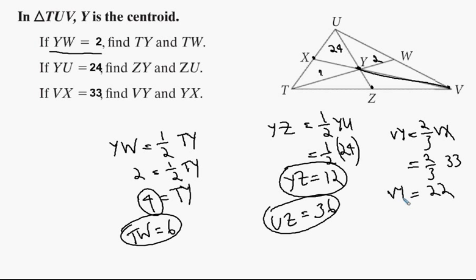And then again, we have the whole thing is 33. This one part that we found is 22, so we can subtract those to get XY, which is of course 11. So there's those two answers. So there you go.